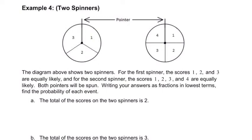So in this video, we're dealing with spinners. In this diagram, as it says here in the description, the first spinner has scores 1, 2, and 3, and the second spinner has 1, 2, 3, 4.